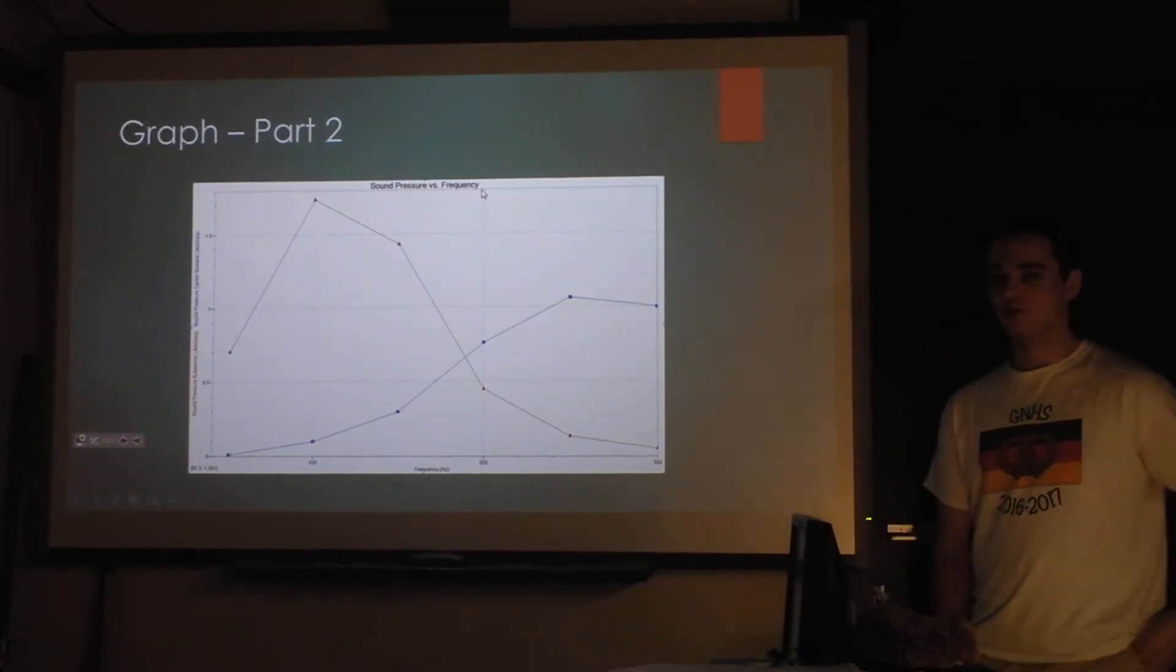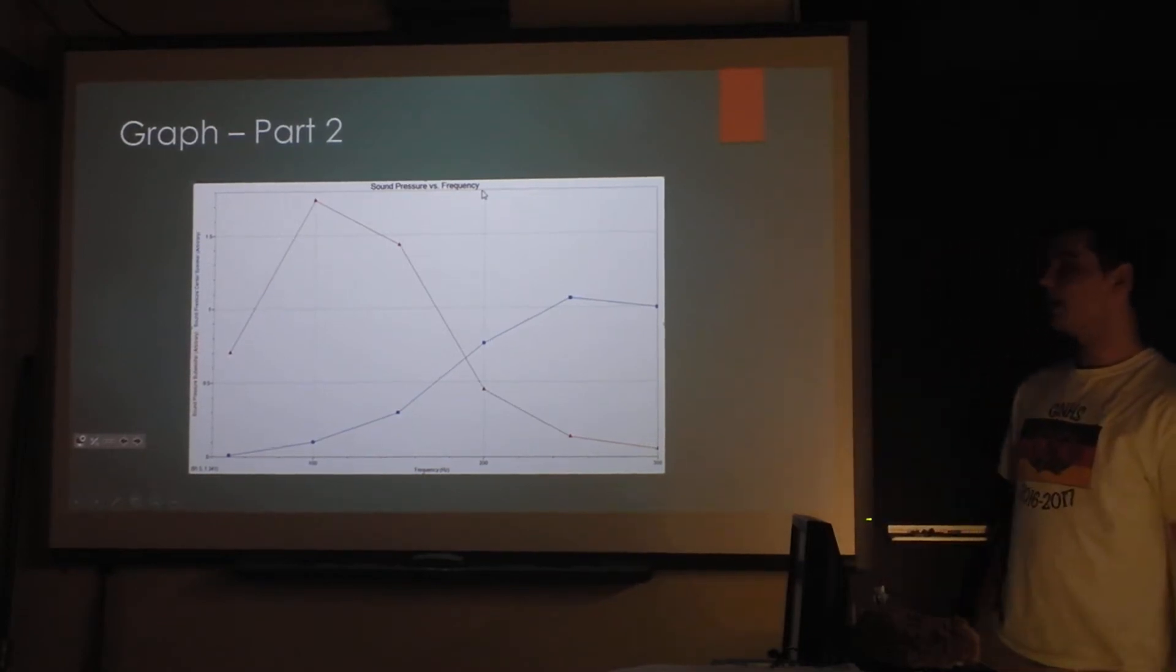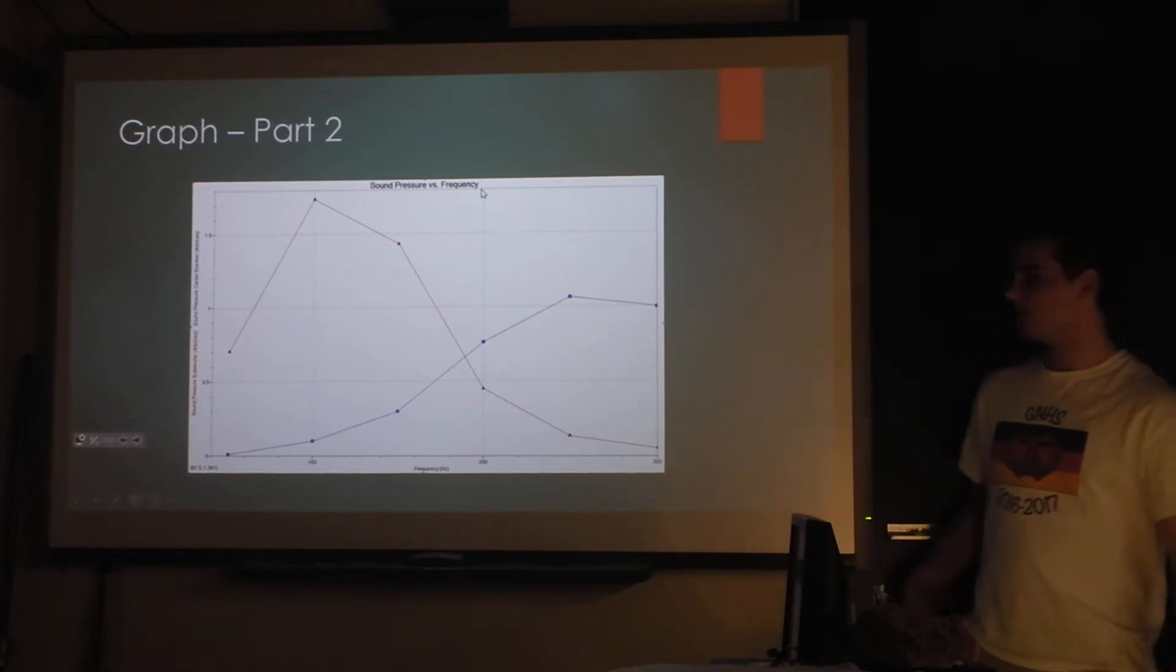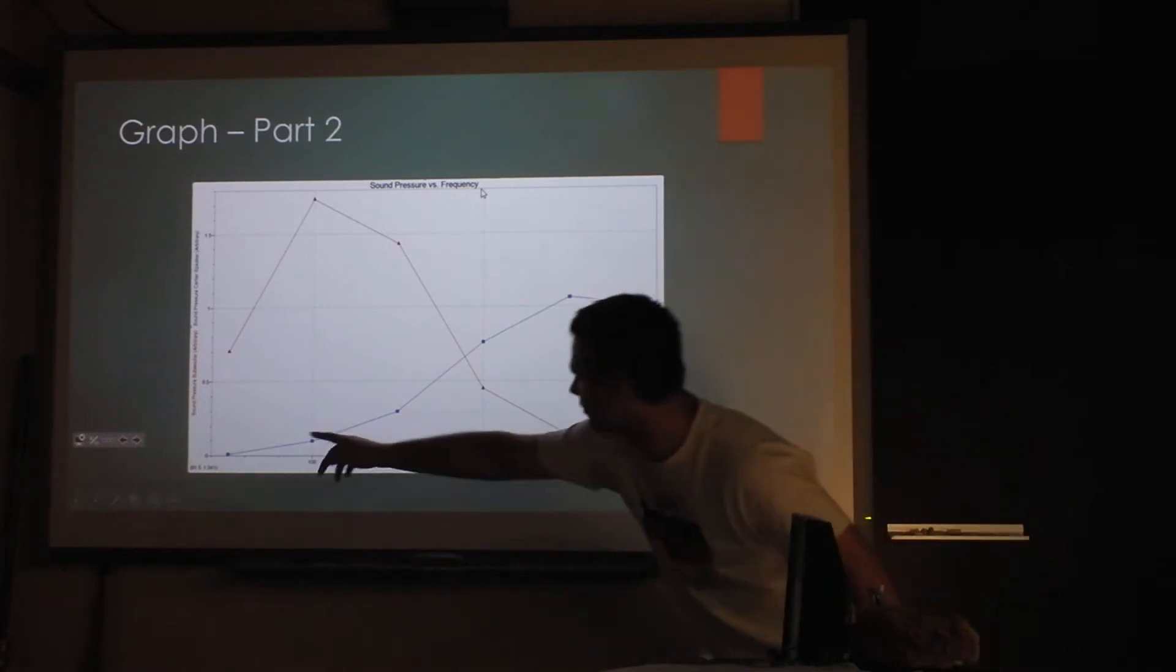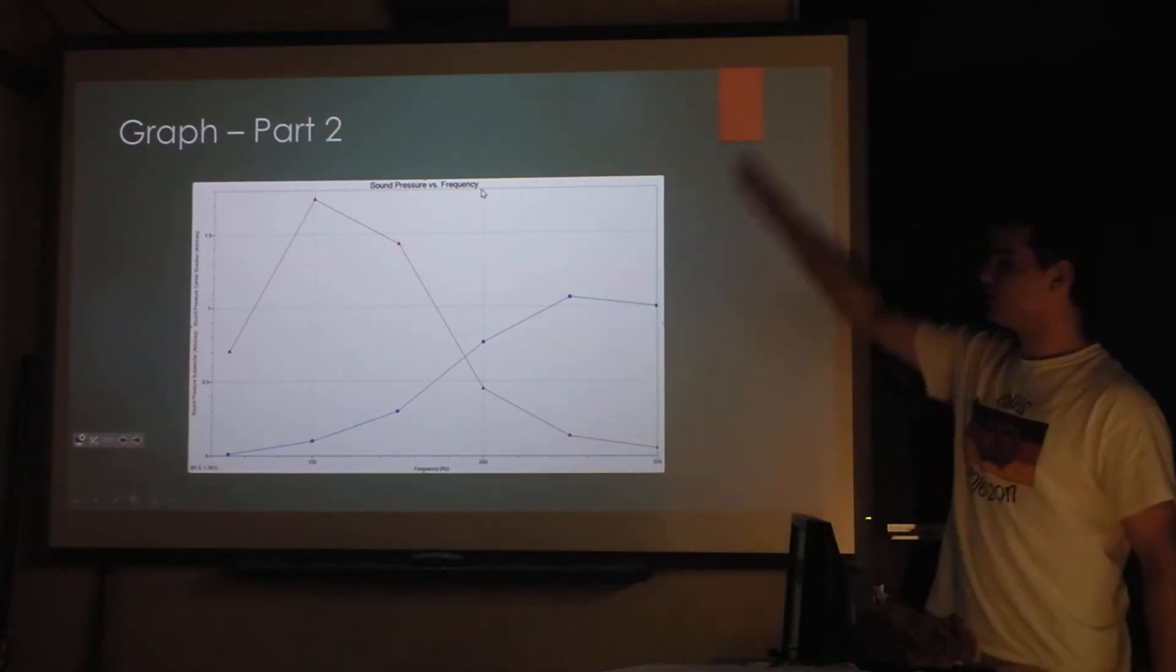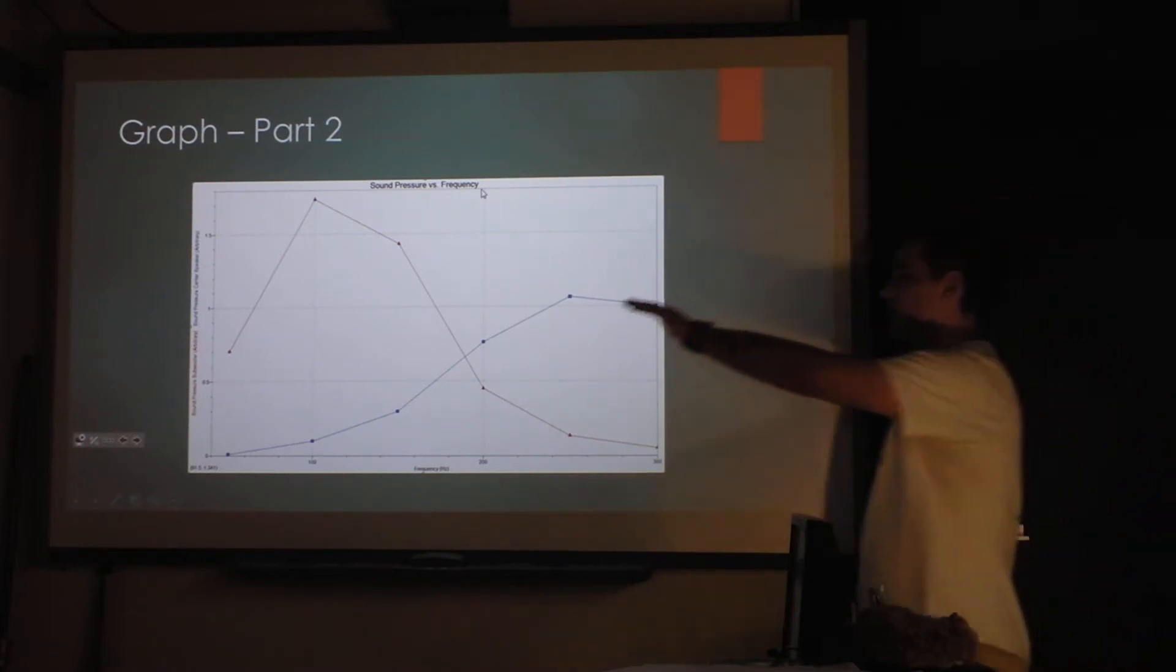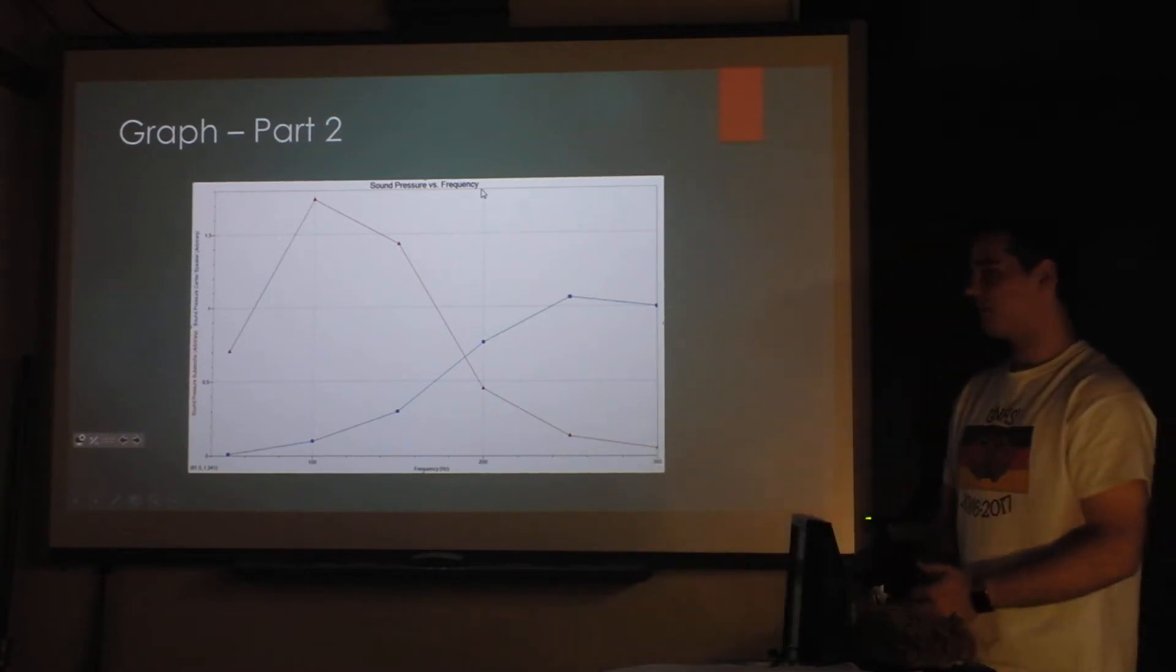So this is the graph for part two. This is one where I did the constant test tone sounds for each speaker. And I compared the values and it's kind of just what I expected. The subwoofer started really low, around looks like 20, 30 hertz. Picked up, peaked right at 100 hertz, and then slowly dropped all the way down to almost nothing at 300 hertz. Kind of what I expected.